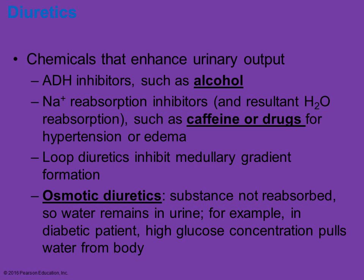Sodium reabsorption inhibitors such as caffeine and some drugs will interfere and can also increase the amount of urinary output. Some drugs used for treating hypertension, or high blood pressure, work this way — they essentially act as a diuretic, increasing urine output. Certain substances that are not going to be reabsorbed remain in the urine or cause water to remain. Glucose is one example: if there are high glucose concentrations, it tends to pull water from the body and increase urine production. This is one of the symptoms of diabetes.